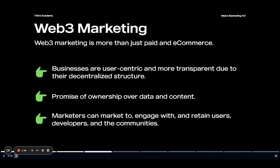Marketing is a huge field — you have search engine optimization or SEO, e-commerce, paid, organic — the types are seemingly endless. Both Web 2 and Web 3 have all of these fields of marketing, but what changes is how companies or projects and their user base interact. Web 3 is based on the fundamentals of transparency and decentralization brought to us by blockchain. This means businesses need to be more user-centric; oftentimes those same users have a financial stake in the company, so they want clear reports, and that starts with marketing as the first layer of contact many users have with a company.